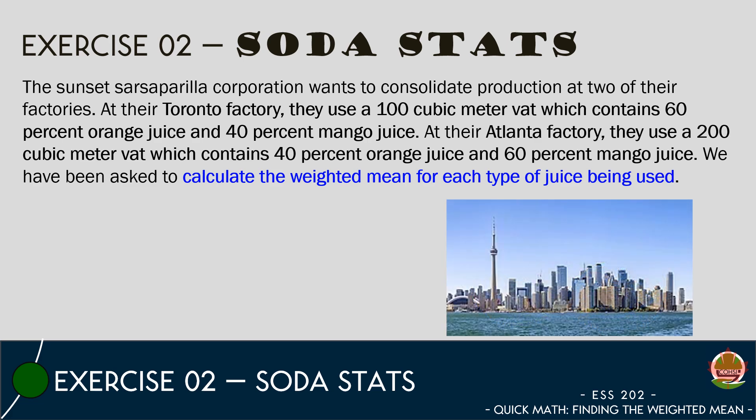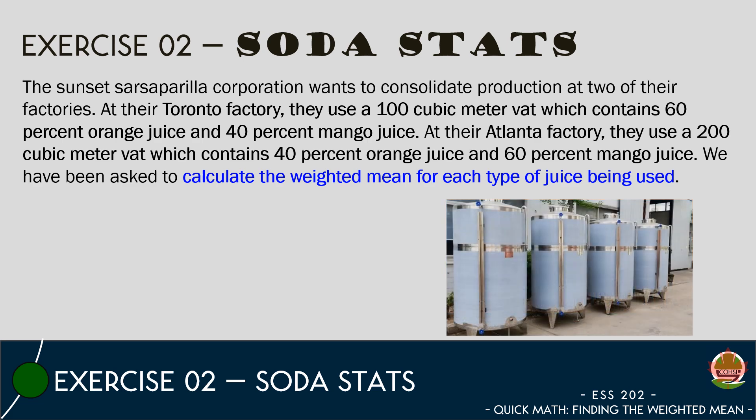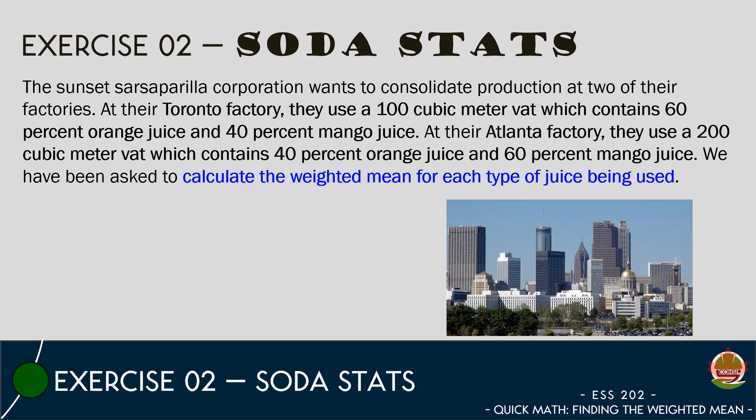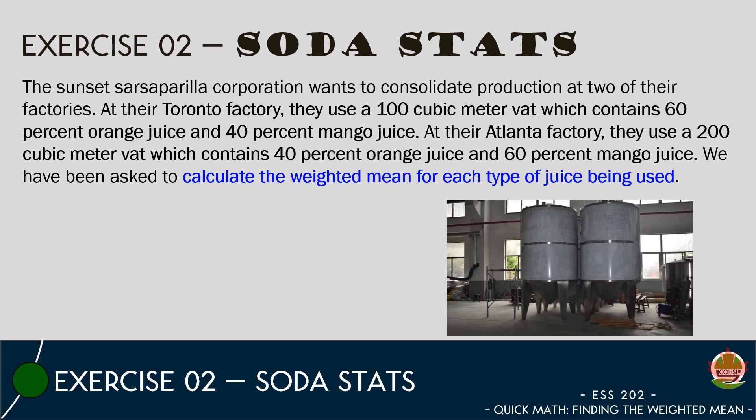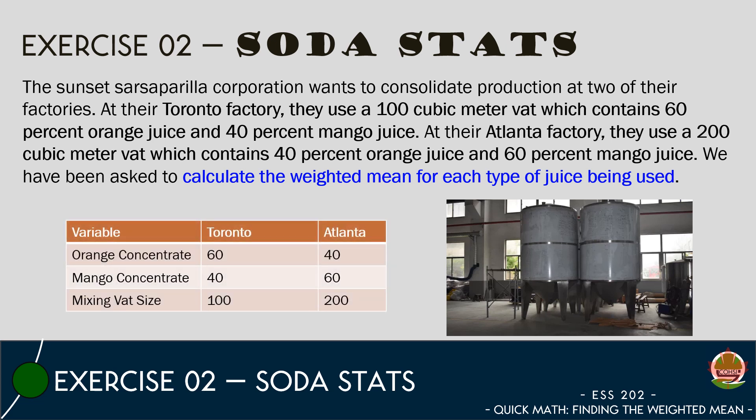At their Toronto factory, they use a 100 cubic meter mixing vat which contains a ratio of 60% orange juice and 40% mango juice. At their Atlanta factory, they use a 200 cubic meter mixing vat which contains a ratio of 40% orange juice and 60% mango juice. These values can be seen in the table below.